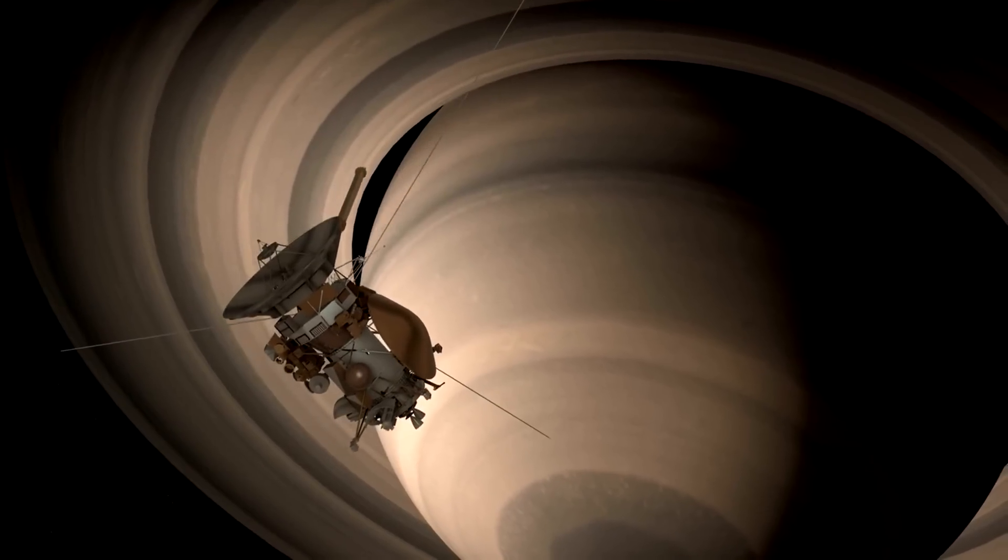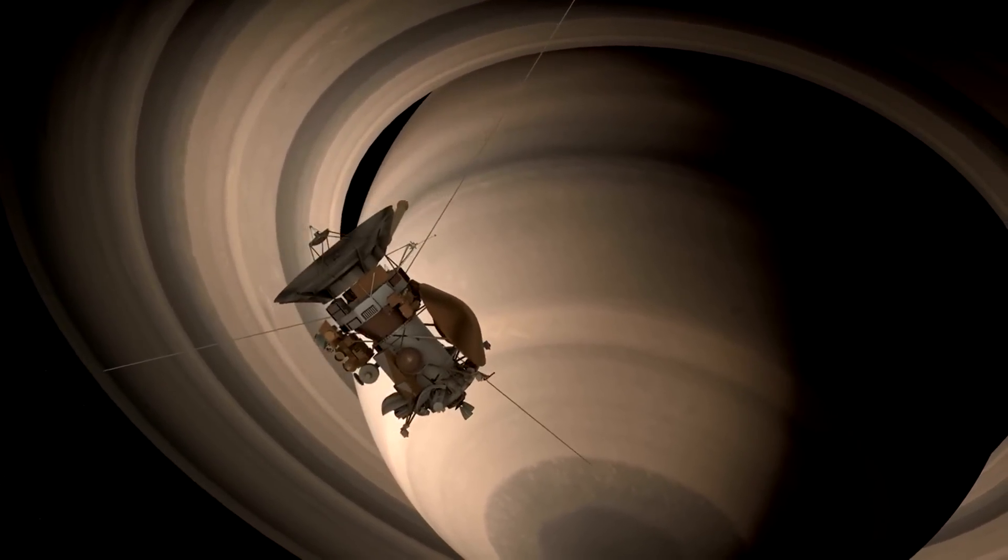However, even after Voyager 1 stops sending back data, its mission will not be over. The spacecraft will continue to drift through the galaxy, a silent emissary from Earth, carrying the Golden Record and the legacy of its journey.